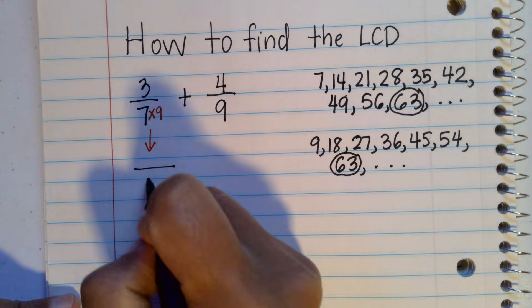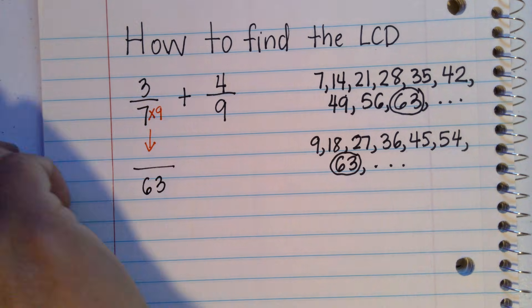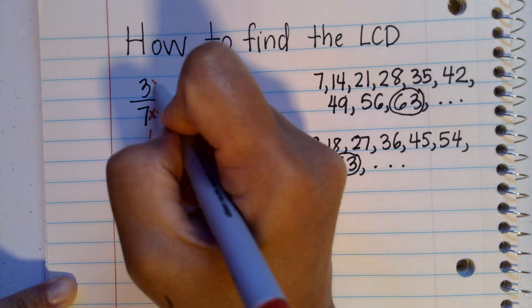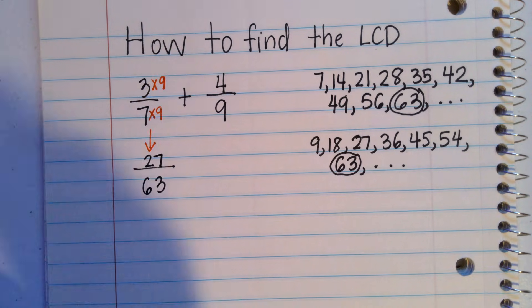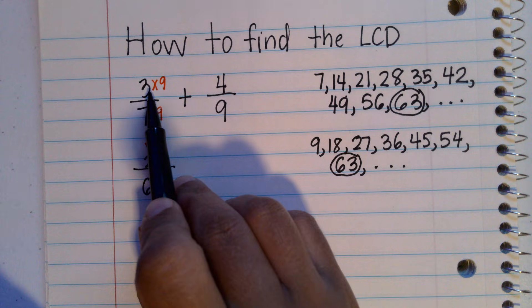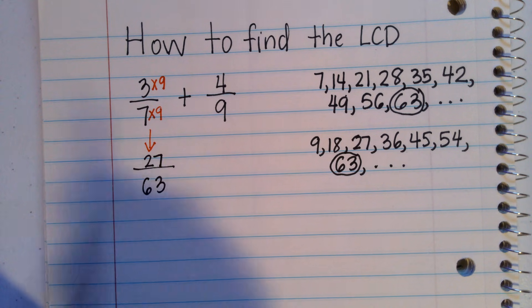So the new denominator now is 63. But since this is a fraction, you have to do the exact same thing to the numerator. Three times nine is 27. So you can express three sevenths as 27 over 63.